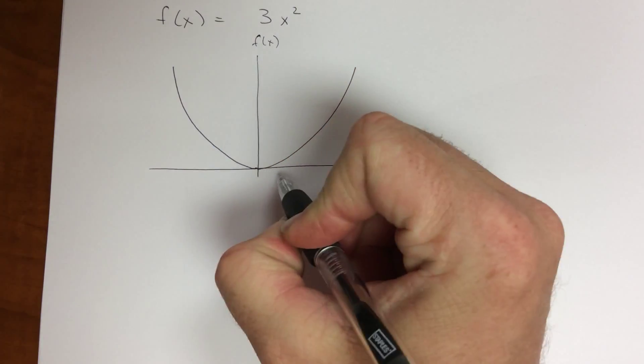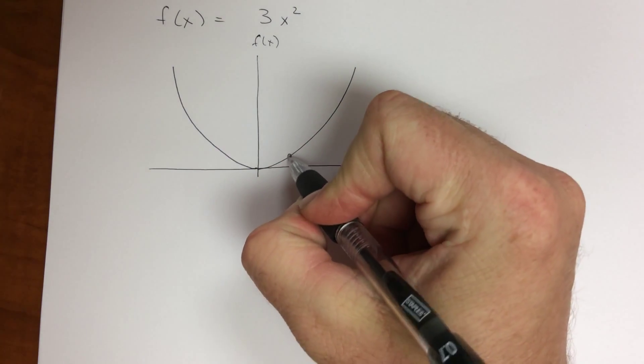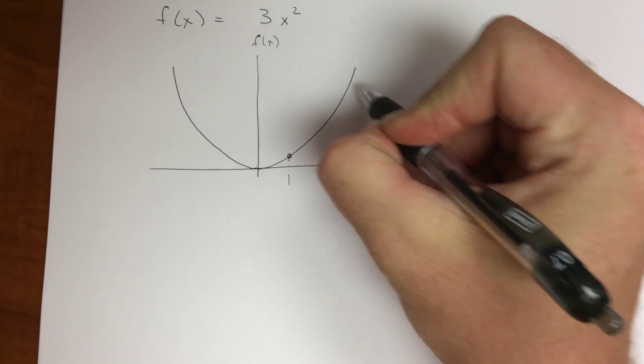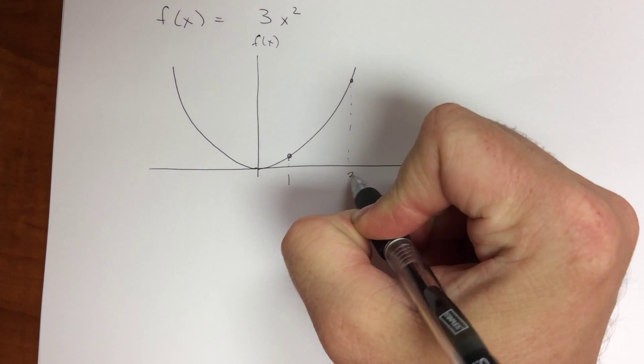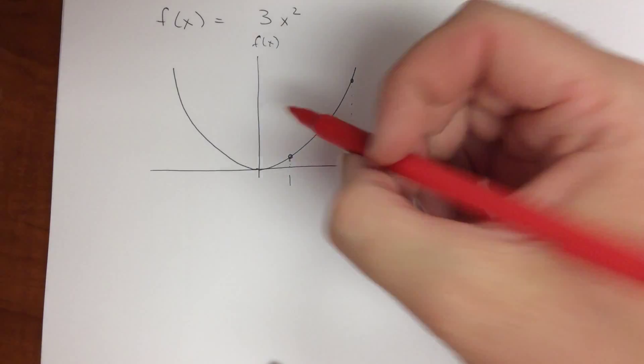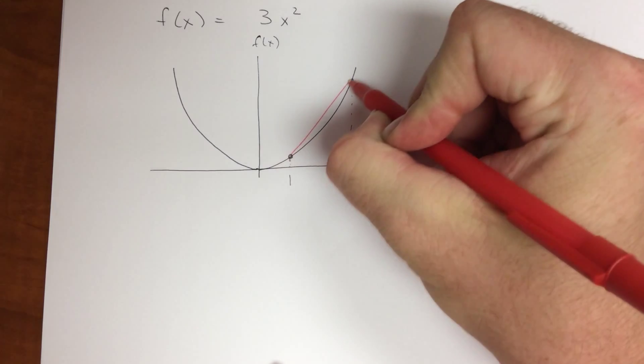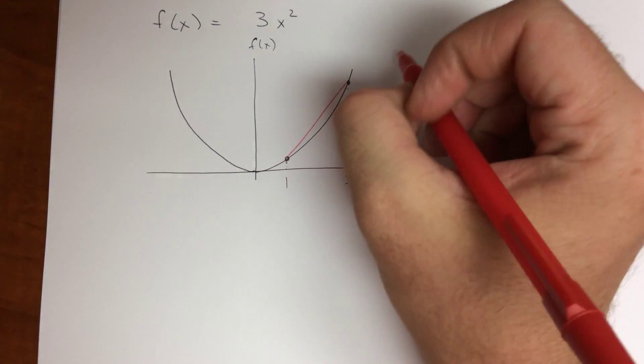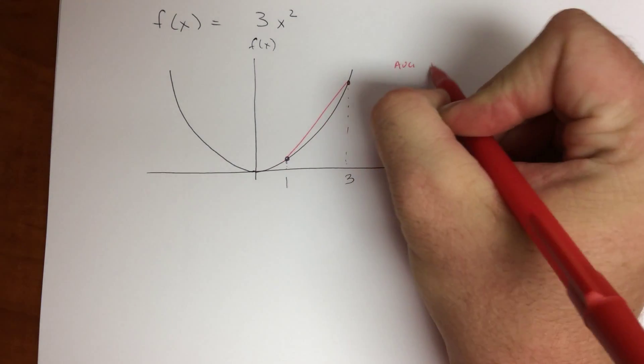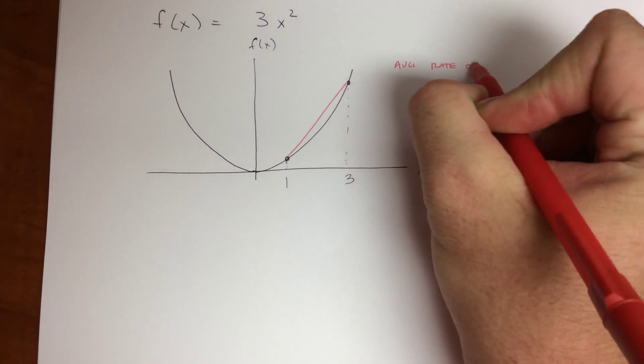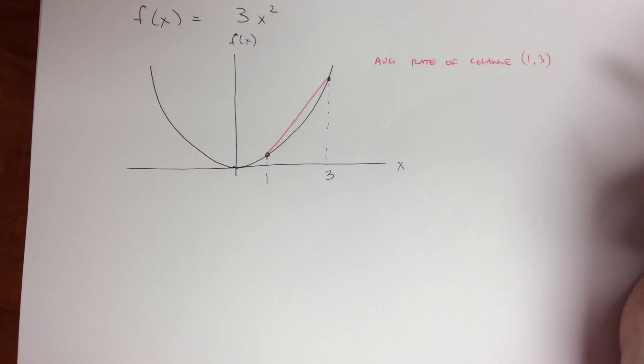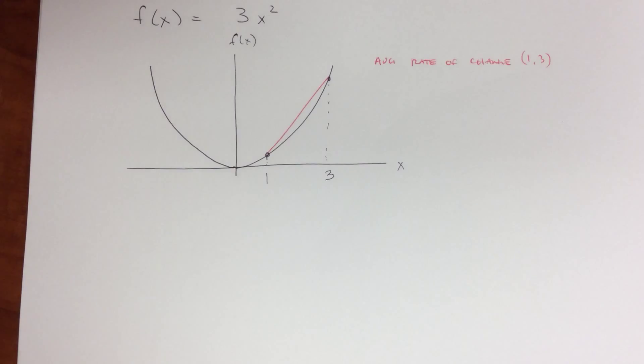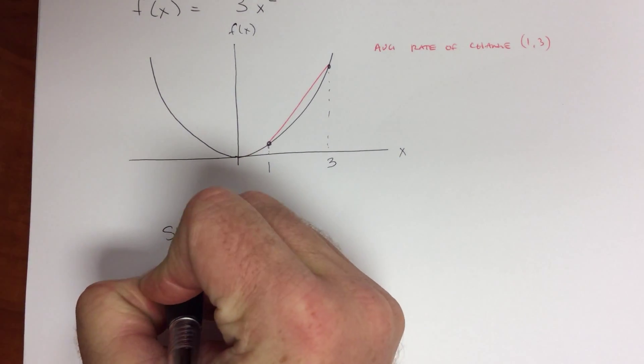So what I want to do is I want to find what is the secant line between the point 1 and the point 3. So I want to find what is the slope between these two points, or rather, what is the average rate of change between 1 and 3. Well, how do I do that? Let's go ahead and rewrite the equation we had for the slope of the secant.